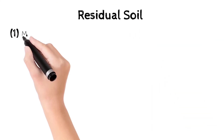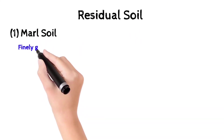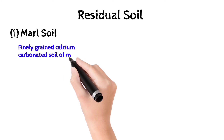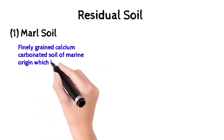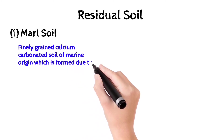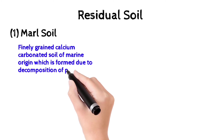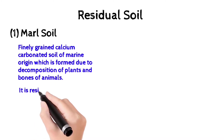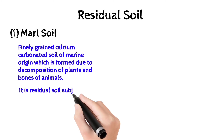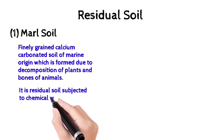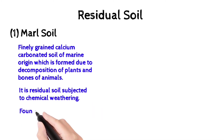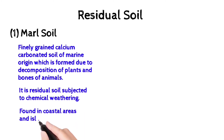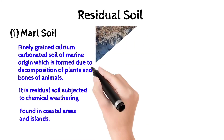The first classification of residual soil is marl soil. It is a finely grained calcium carbonate soil of marine origin, formed due to decomposition of plants and bones of animals. It is a residual soil subjected to chemical weathering and is found in coastal areas and Iceland.